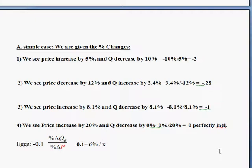Well, just solve for X percent change in price on the bottom. You can multiply both sides by X and you got minus 0.1X equals 6%. Now you're going to divide both sides by 0.1, negative.